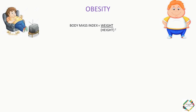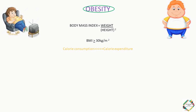Now when will we call a person obese? The term obesity is given to individuals with a body mass index of 30 kg per meter squared or greater. This usually occurs when calorie consumption exceeds calorie expenditure, that is, when there is an energy imbalance.